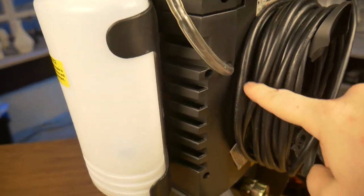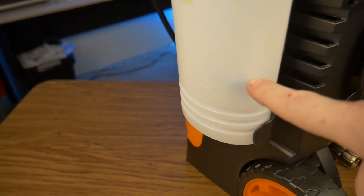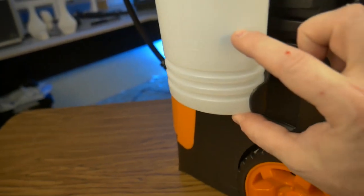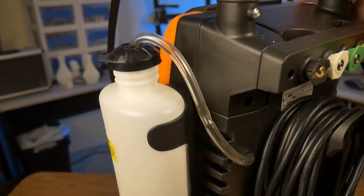Worse than the ill-fitting holster, the soap dispenser sits too high on the machine so that the dispenser hose cannot reach the bottom of the bottle. That leaves about a quarter of unusable volume at the bottom of the soap bottle.